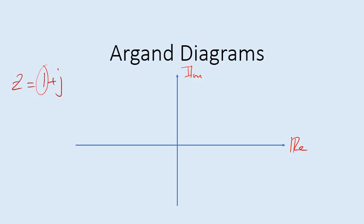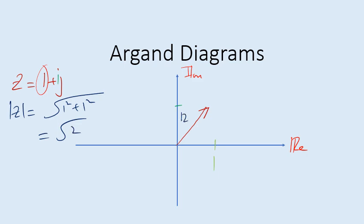Let's look at how to represent z = 1 + j on an Argand diagram. The real part is 1 and the imaginary part is 1. The horizontal axis belongs to the real part and the vertical axis to the imaginary part. So we go to 1 on the real axis and 1 on the imaginary axis and plot a vector pointing in that direction. The length of that vector — the magnitude — is √(1² + 1²) = √2. So |z| = √2.